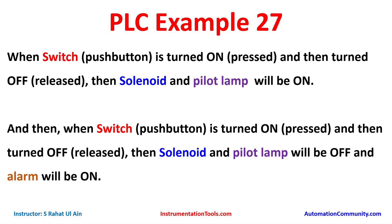When the switch is turned on and then turned off, the solenoid and pilot lamp will turn on. Then when the switch is turned on and turned off again, the solenoid and pilot lamp will turn off and the alarm will turn on. That means when the push button is first pressed and released, solenoid and pilot lamp turn on, and when pressed and released a second time, solenoid and pilot lamp turn off and alarm turns on.